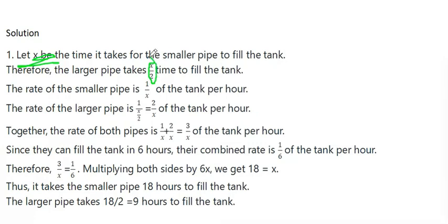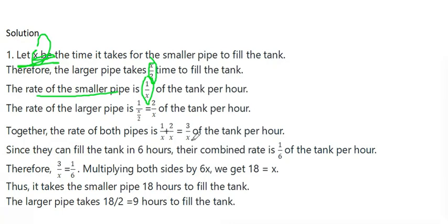The largest pipe takes twice as long to fill the tank. The rate of the smallest pipe is 1 over x of the tank per hour. The rate of the larger pipe is 1 over 2x, giving a combined contribution of 2 over x of the tank per hour. Since they can fill the tank in 6 hours, their combined rate is established.